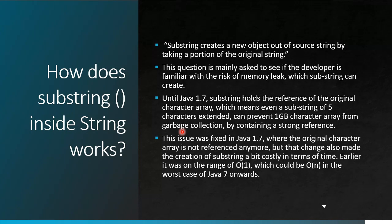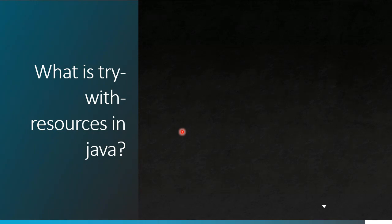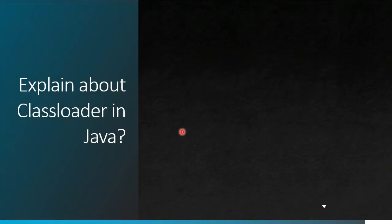The next question is: what is try-with-resources introduced in Java 7? Before Java 7, there was no automatic resource management — resources had to be explicitly closed, usually in the finally block of a try-catch statement, which could cause memory leaks if forgotten. From Java 7, we can create resources inside the try block and Java takes care of closing them automatically, because the resources implement the AutoCloseable interface.